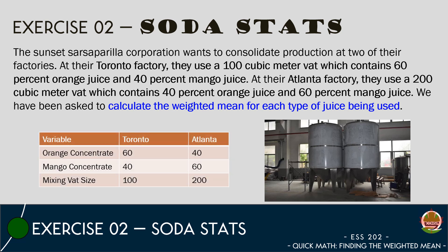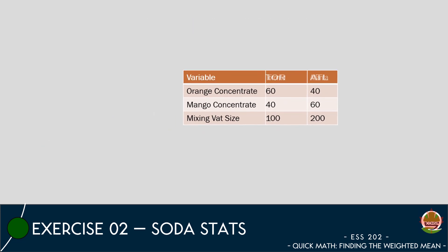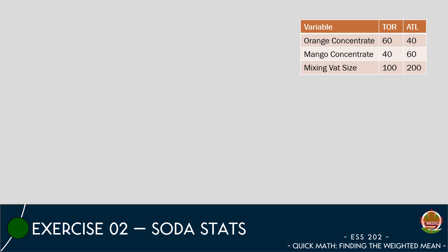We have been asked to calculate the weighted mean for each type of juice being used. We first need to decide whether we are going to calculate the value for the orange juice or the mango juice. Let's start with the orange juice. We know that Toronto uses 60% orange juice in their soda and Atlanta uses 40% orange juice in their soda.